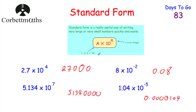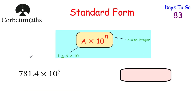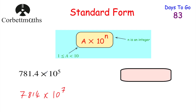Sometimes you're given a number that almost looks like it's in Standard Form but isn't. For example, 781.4 × 10⁵ — 781.4 is not between 1 and 10. We rewrite it as 7.814, which is 100 times smaller (dividing by 100). To compensate, we multiply the power part by 100, increasing the power by 2: so 781.4 × 10⁵ in Standard Form is 7.814 × 10⁷.